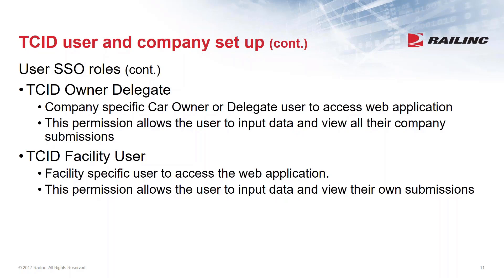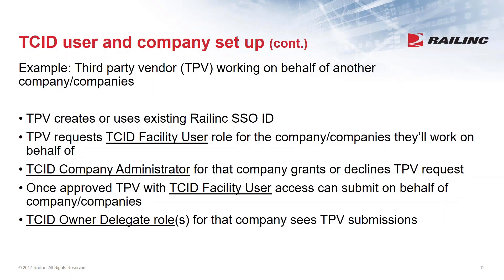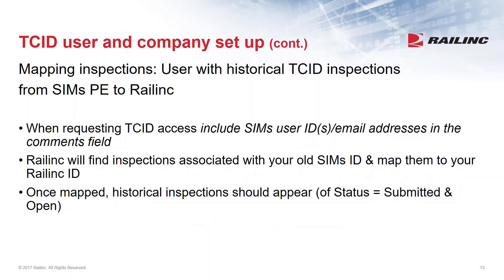A Facility User is a more limited role - they only have access to the submissions they themselves have submitted. They can view and input their own data, whereas the owner delegate can see all facility users' submissions. As an example of how a third-party vendor could work: the vendor creates or uses an existing SSO/railing user ID, requests facility user access for the company they'll work on behalf of, the company administrator approves or declines that request, and once approved the vendor can submit on behalf of those companies.